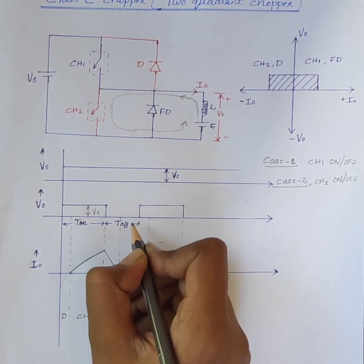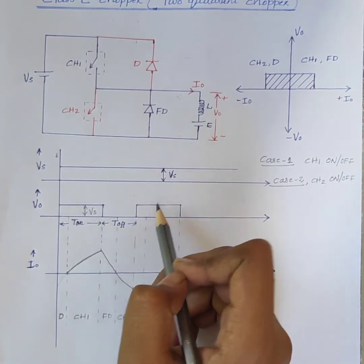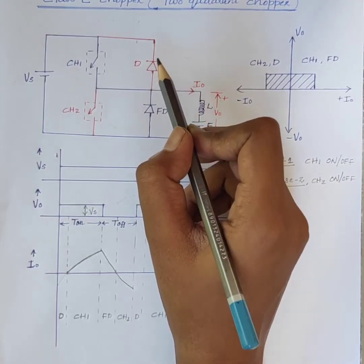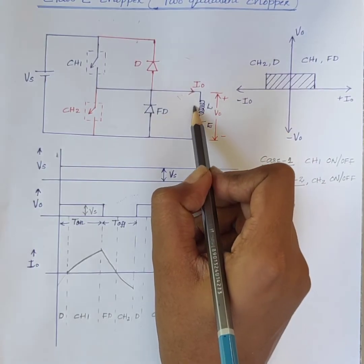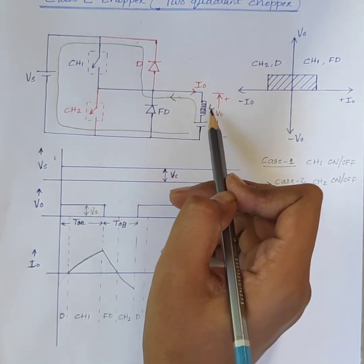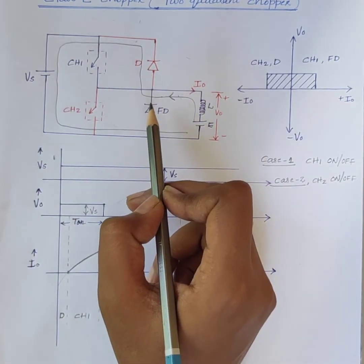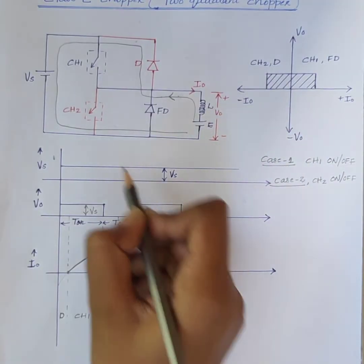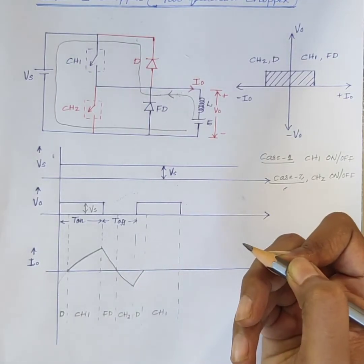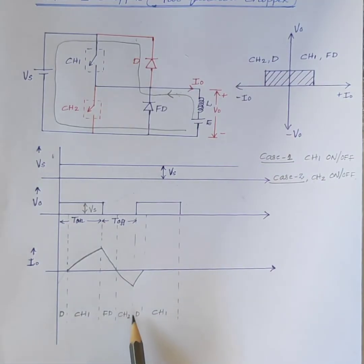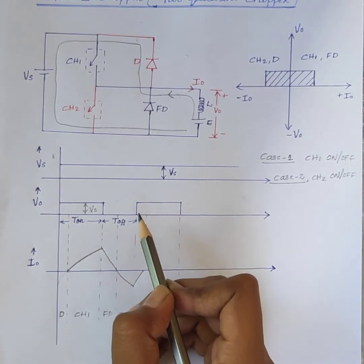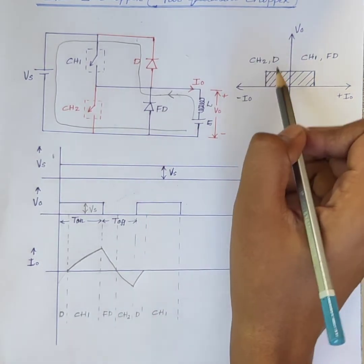The output voltage V0 is 0 when CH2 is on. When CH2 is in the off state, diode D gets forward biased and hence the current flows from load to the source. Therefore, the output voltage V0 is connected to the source through diode D, and V0 is equal to Vs during this interval. When CH2 is in the on state or off state, the output current I0 is always negative and the output voltage V0 is positive. Therefore, the operation of the chopper is in the second quadrant — this is the Class B mode of operation.